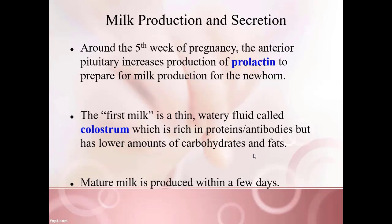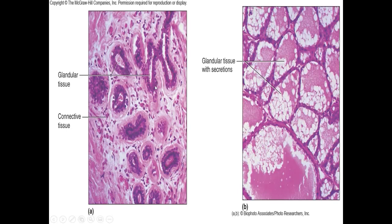Around the fifth week of pregnancy, the anterior pituitary gland increases production of prolactin to prepare for milk production. Placental lactogen causes structures like the breast to get larger, but prolactin is what actually triggers milk production. The first milk produced — colostrum — is very watery and thin, very high in antibodies and protein, but very low in carbohydrates and fats. Colostrum is important because of its high antibody content. Normal mature breast milk comes in a few days later and is very high in fat and carbohydrates but much lower in protein and antibodies. Histological slides of breast tissue show a clear difference in size from early to late pregnancy due to placental lactogen.